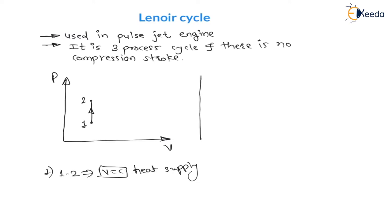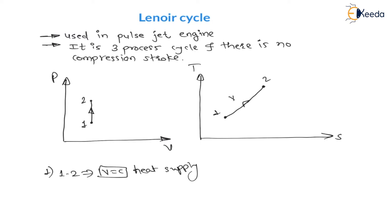If I draw a T-S diagram — temperature versus entropy diagram — at constant volume, if heat is supplied, both entropy and temperature will increase, keeping volume constant. This is process 1 to 2, a constant volume process.